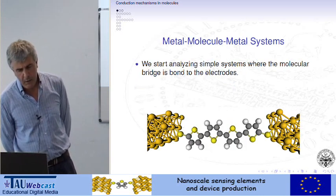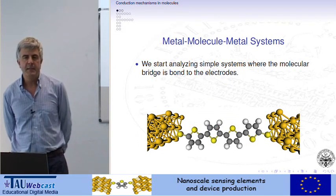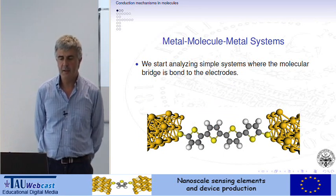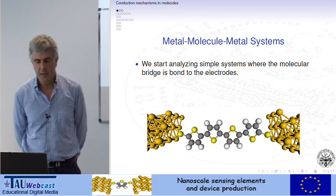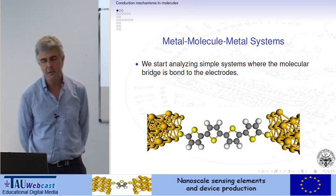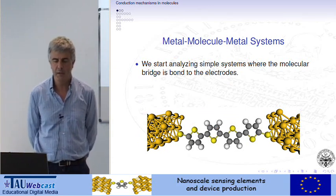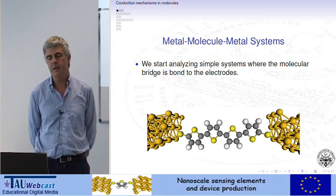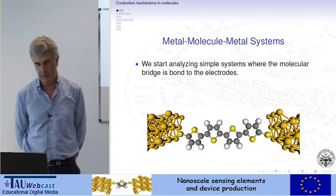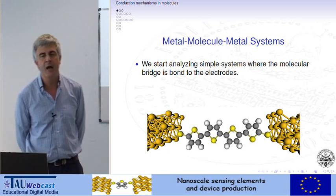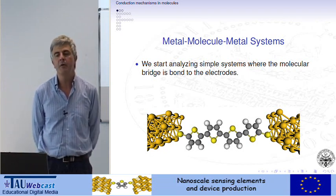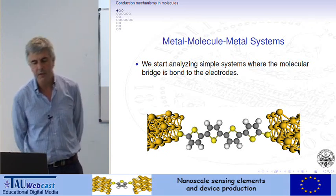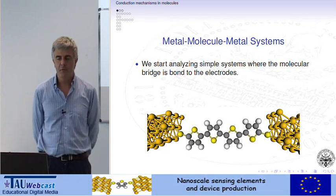As you know, our reference system is built up by two metal electrodes, generally gold electrodes, and between them we insert a molecule by self-assembly, generally by sulfur-thiol binding. What we are interested to understand is how current, how electron flux, can be described from the left electrode to the right one.